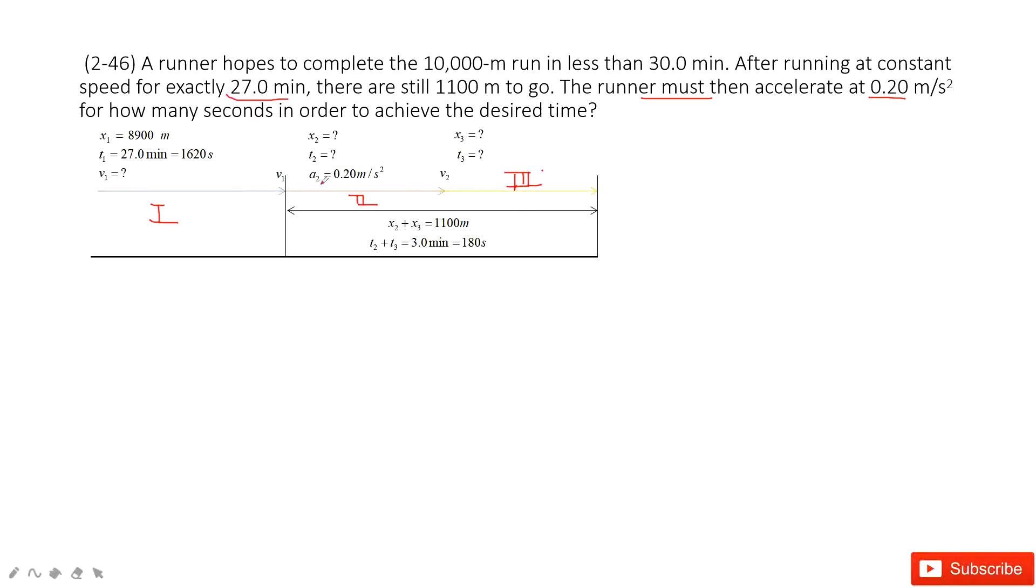Speed up with the acceleration a2, 0.2 meter per second squared. We don't know how much displacement for this part and the time taken for this part. And for part 3, we can make the runner move at constant velocity.